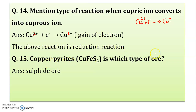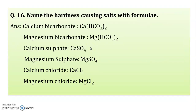Copper pyrite is which type of ore? There are various types of ore: oxide ore, carbonate ore, sulfide ore. Copper pyrite contains sulfur, so it is a sulfide ore.